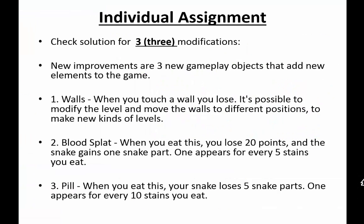Individual assignment: check the solution for three modifications. The new improvements are three new gameplay objects that add new elements to the game. Number one: Walls — when you touch a wall, you lose. It's possible to modify the level and move the walls to different positions to make new kinds of levels or difficulties. Number two: Bloodsplat — when you eat this, you lose 20 points and the snake gains one snake part; one appears for every five stains you eat. Number three: Pill — when you eat this, your snake loses five snake parts; one appears for every ten stains you eat.